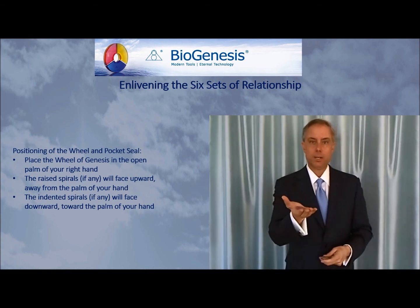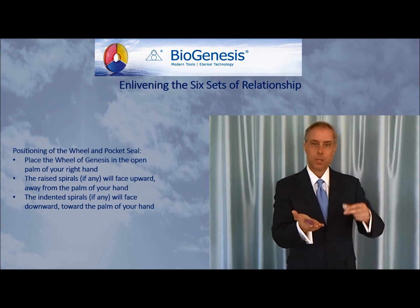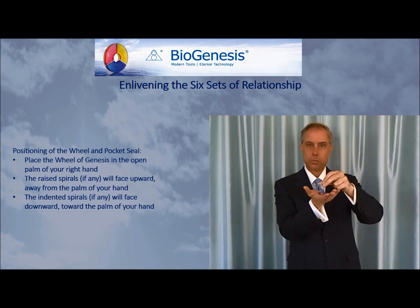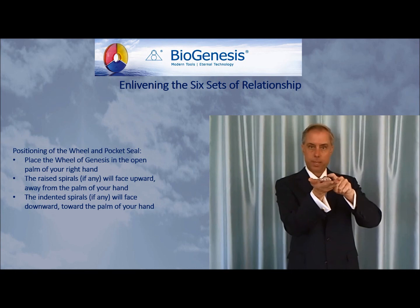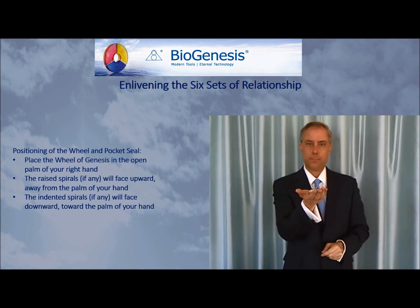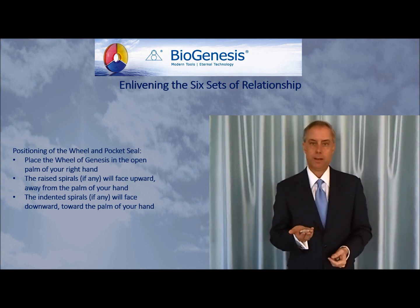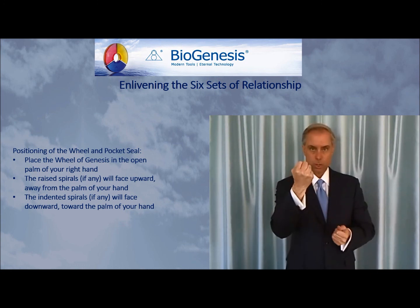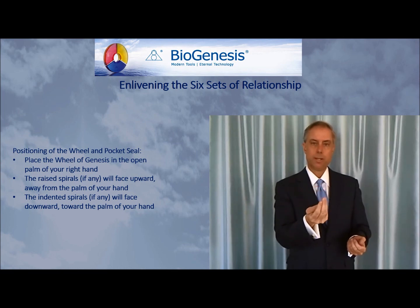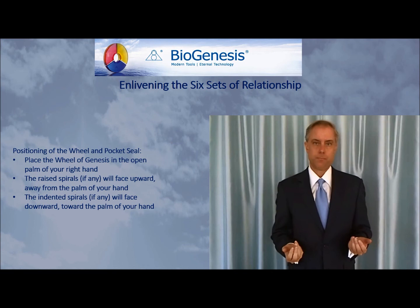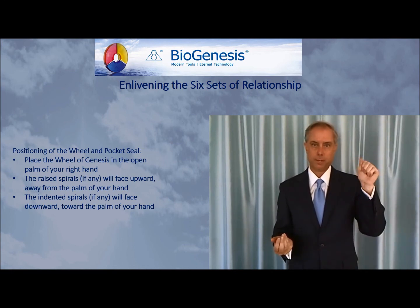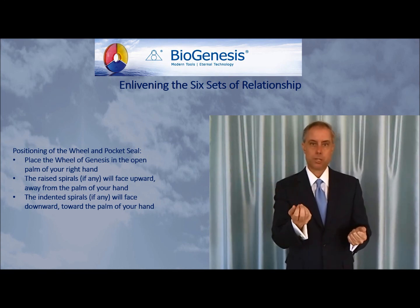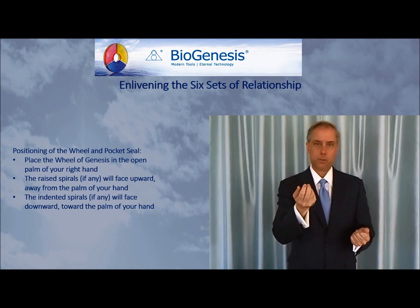Once you have placed the wheel in the open palm of your right hand, you will take the pocket seal — the flat side goes against the wheel, allowing the side with the raised spirals to face upward. If you simply hold your hand flat, the pocket seal will fall out. You won't close your palm completely, but you will cup the wheel and the pocket seal with your fingers. In your left hand, you hold the pendant of eternal light and close that hand completely. In your right hand, just gently cup the wheel and the pocket seal with your fingers.